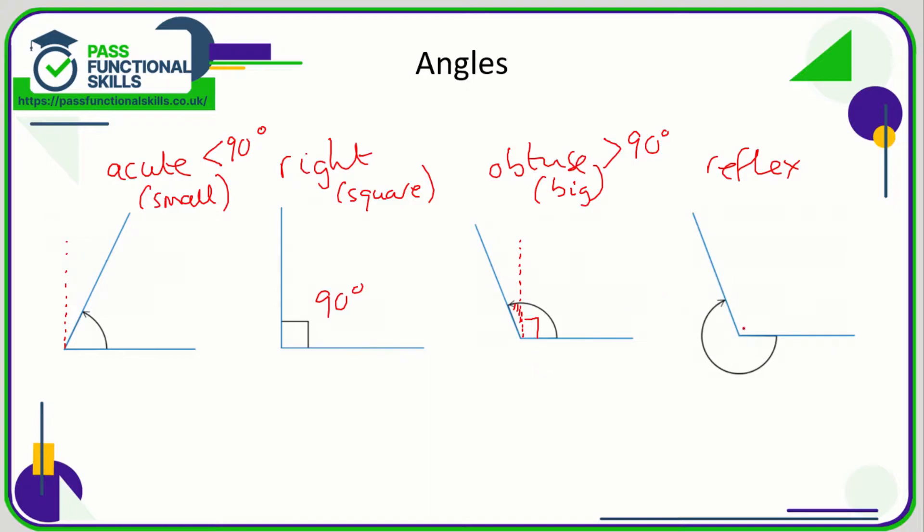And a reflex angle, this is an angle which is greater than 180 degrees. So here we have normally when we put two lines together we'd be looking at this angle here. Now the reflex is the massive one around the back basically. So acute is less than 90, a right angle is 90, and obtuse is greater than 90 but less than 180, and a reflex is an angle that is greater than 180 degrees.